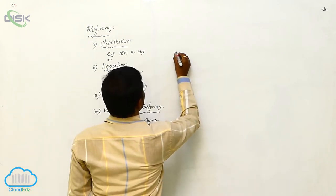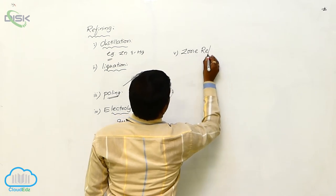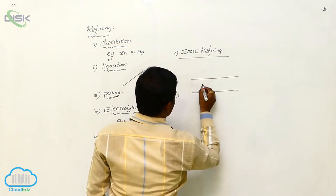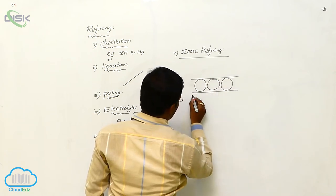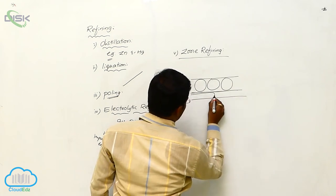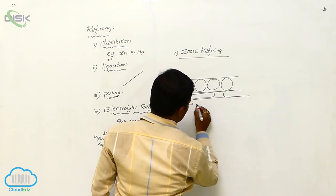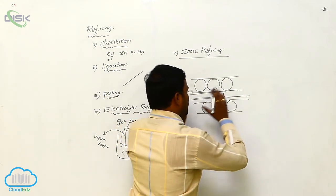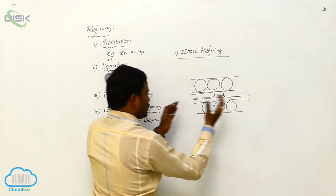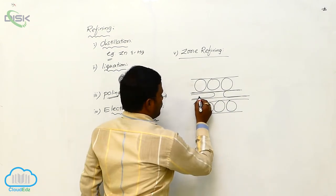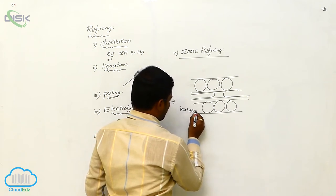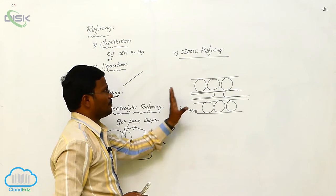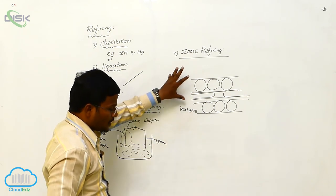The next method is zone refining. In this process, the metals are introduced into high-temperature areas. The metals move from one side of the equipment to the other side on a belt. During this, by using inert gases, the impurities present in the metals can evaporate or escape. This type of purification is called zone refining.